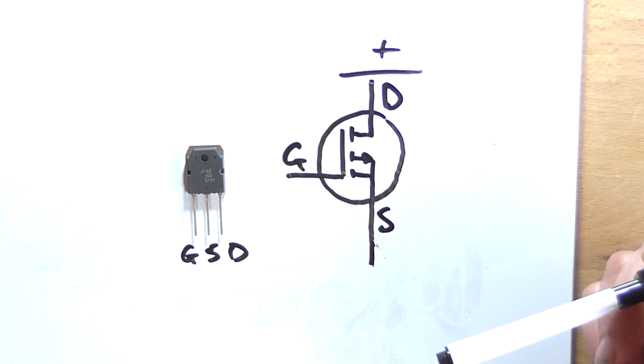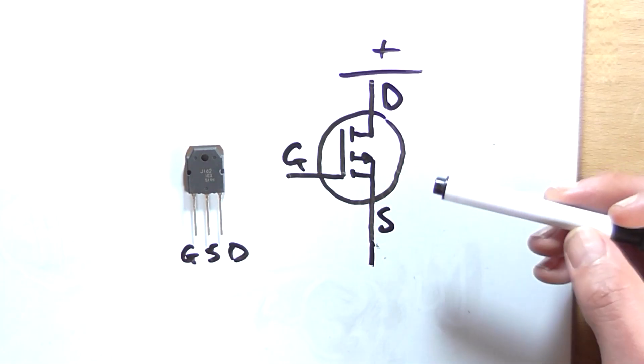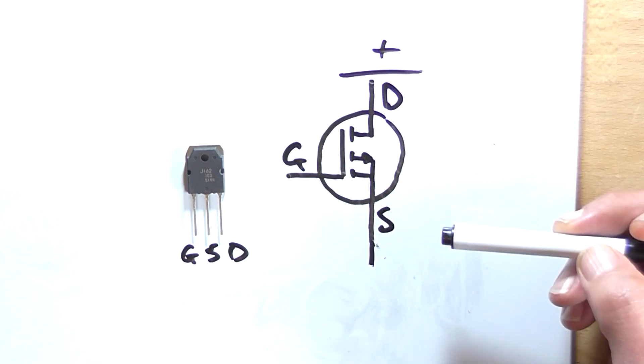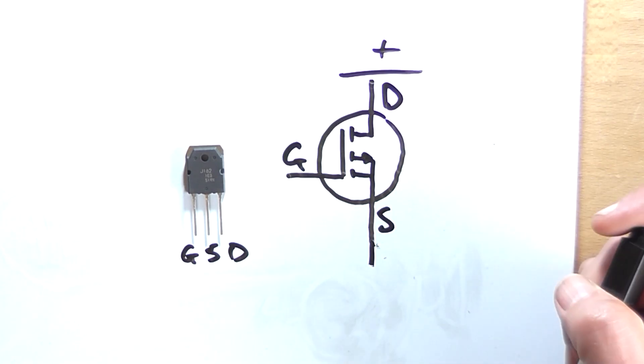So that's how you identify the drain and source pins on a schematic symbol for a MOSFET — it's always the pin for the source with the arrow pointing either into the device or out of the device.